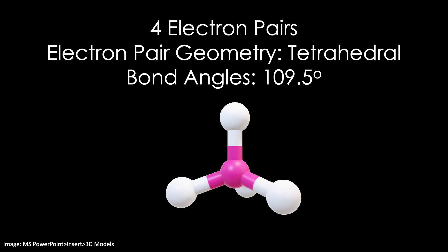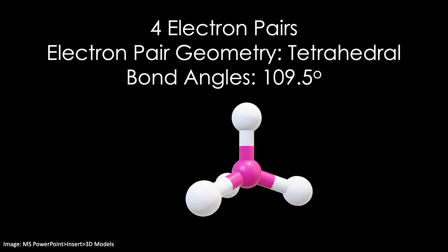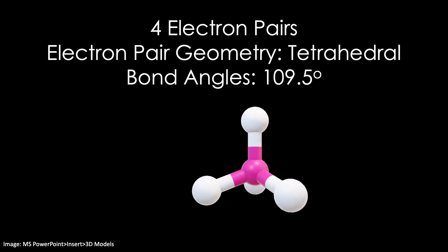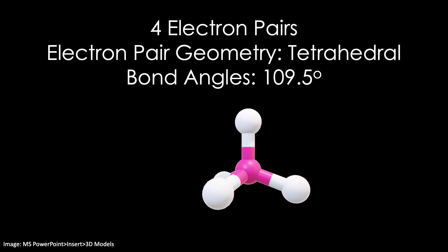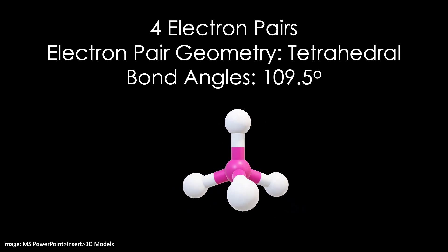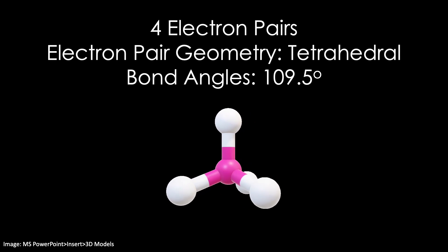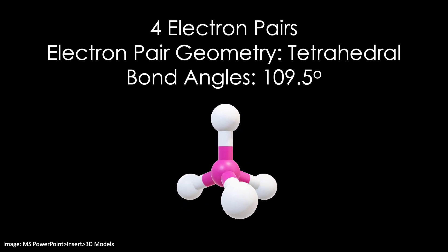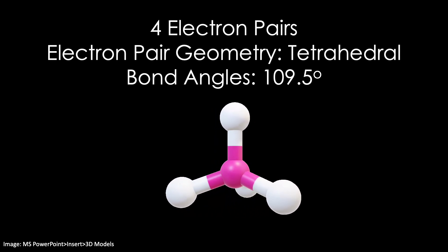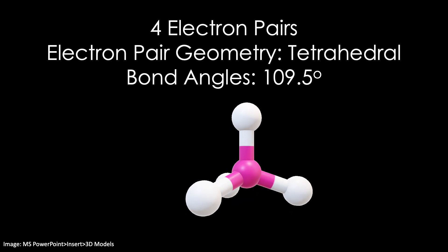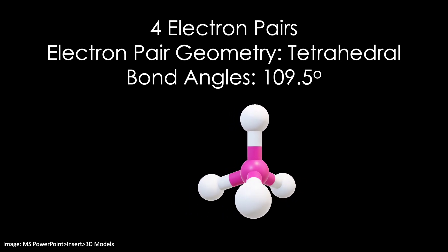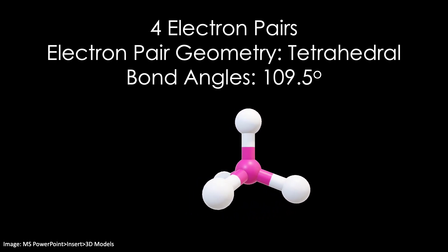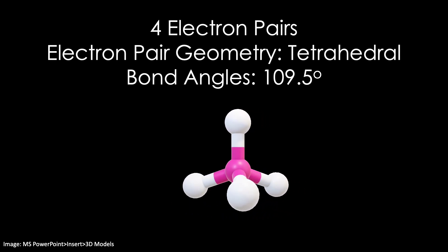For four electron pairs, the optimum electron pair geometry is tetrahedral, with four bond angles of about 109.5 degrees. If you look around the molecule, you'll see the tetrahedral shape, or four faces.